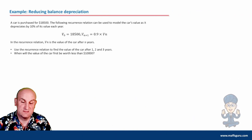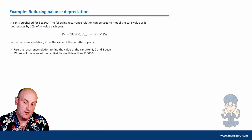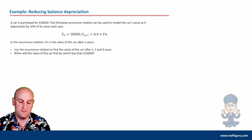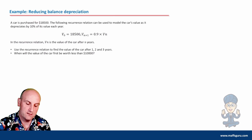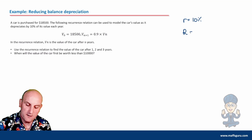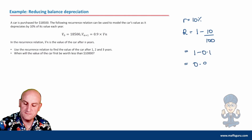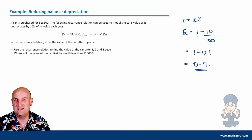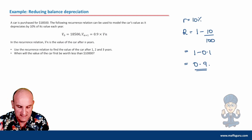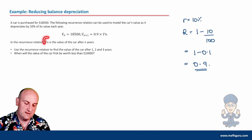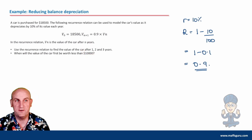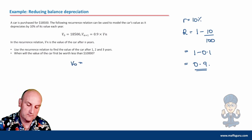A car is purchased for $18,500. The following recurrence relation can be used to model the car's value as it depreciates by 10% each year. Little r is 10%, so capital R is 1 minus 10 divided by 100, which is 1 minus 0.1, equals 0.9. That's confirmed in the recurrence relation. If I see a 0.9 value I know it's been reduced by 10%; if I see 0.8 it's been reduced by 20%. V(N) is the value of the car after N years. V₀ equals $18,500.